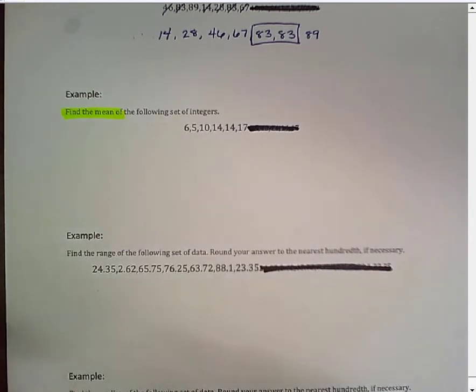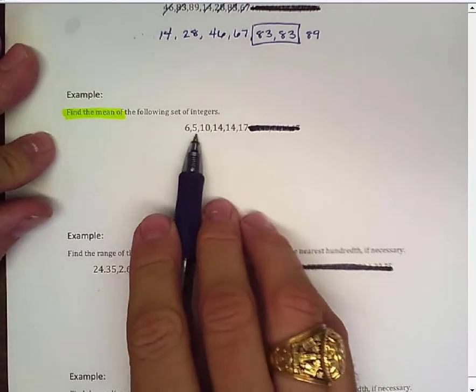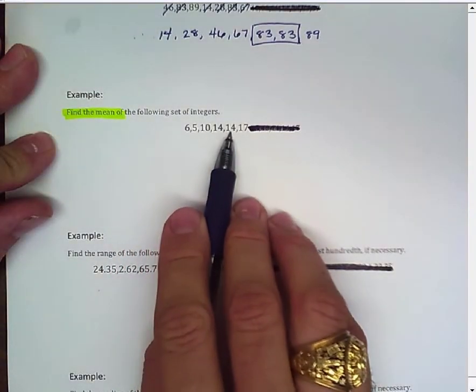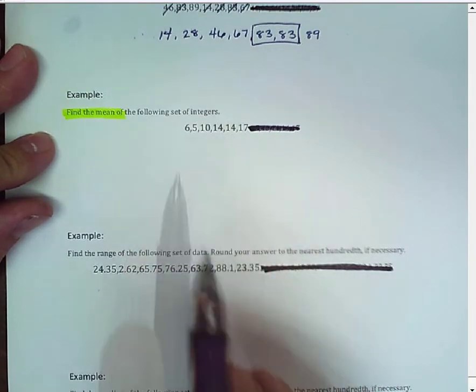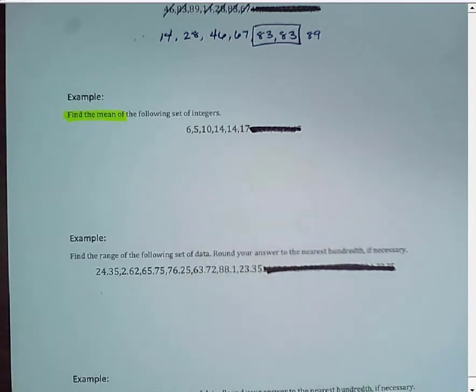So, my average here is averaging 6, 5, 10, 14, 14, and 17. Well, if I were looking for modes, 14 would be my mode, wouldn't it? But I'm looking for the average, so let's go ahead and work that.